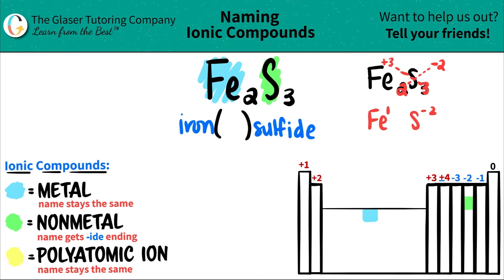Metals always lose electrons, being a plus, and non-metals always gain electrons, giving it a negative.